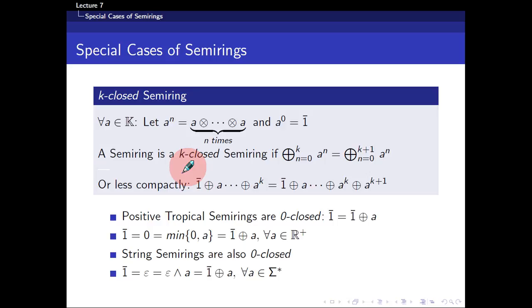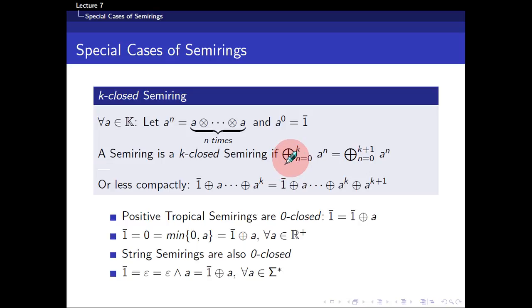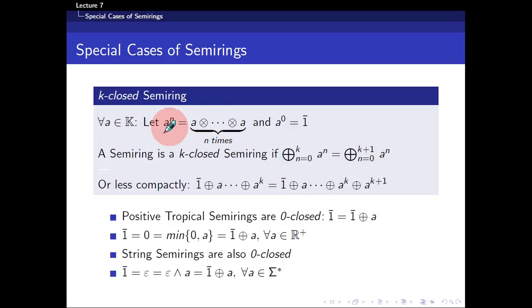A semi-ring is k-closed if and only if a particular expression holds. Writing it out, the big-O-plus (summation) from n=0 to k of a to the power n equals a to power zero, plus a to power one, plus a to power two, all the way to a to power k. The expression states that this sum on the left equals the same sum on the right plus a to the power k plus one.